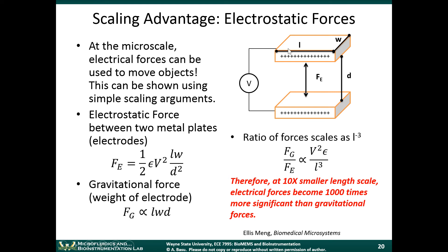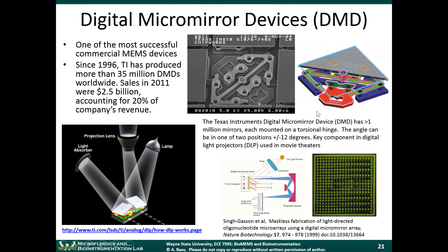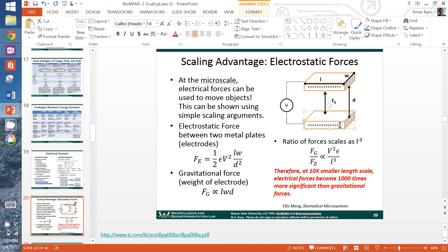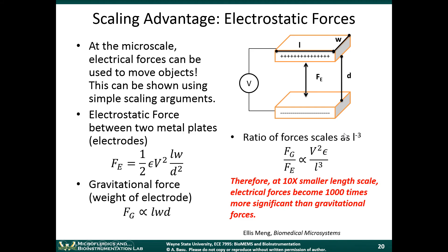If you take two capacitor plates and put a voltage source across them, you have a buildup of positive charge on one plate and negative charge on the other. These charges are stuck in the metal — they can't go through the air, which is an insulating material. There's an electric force that builds up between them, derivable from basic electromagnetic theory, and that force will cause the two plates to come towards each other.